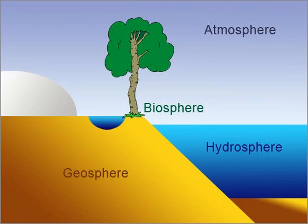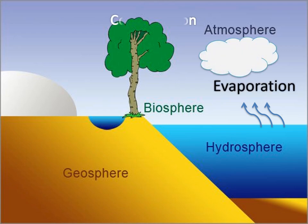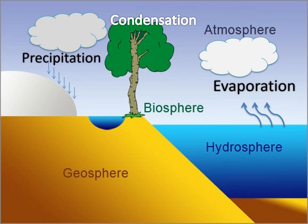This is an example of how the subsystems interact with each other. The example of the hydrosphere is the ocean; biosphere is the tree; geosphere is the land; and atmosphere is the water vapor. First, the water from the ocean will evaporate and form clouds. In the process of condensation, it will become rain — the process of precipitation. And if the water drops onto the land, the water will be absorbed by the trees. This is how the subsystems interact, commonly known as the water cycle.